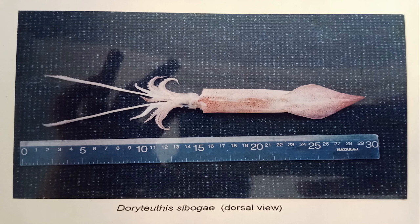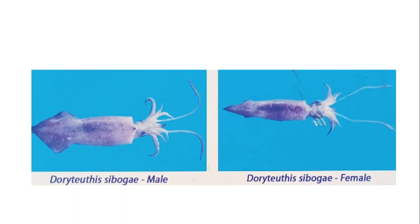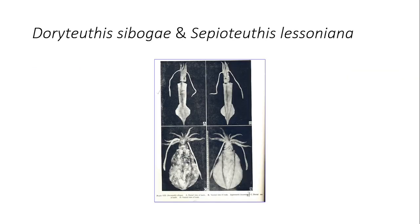The maximum mantle length recorded for Doriteuthis sibogae is 50 centimeters in males and 31 centimeters in females. The mantle is very long and slender, widest at or above the mid-form, tapering to a point. The chitinous rings on the large club suckers bear 22 to 26 short curved conical teeth. The maximum size recorded is about 205 mm for males and 165 mm for females. These are the male and female distinction images of Doriteuthis sibogae.